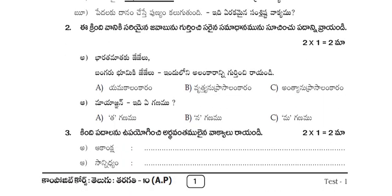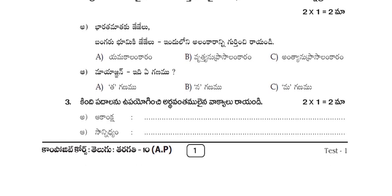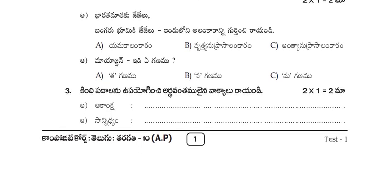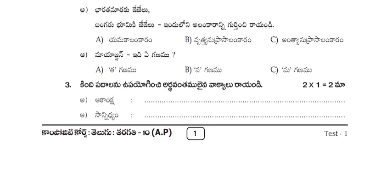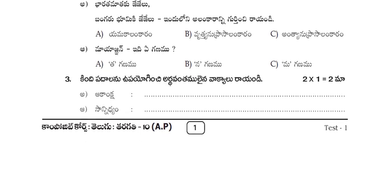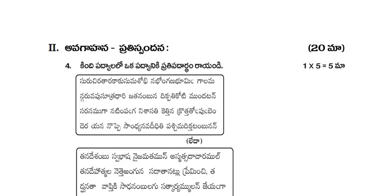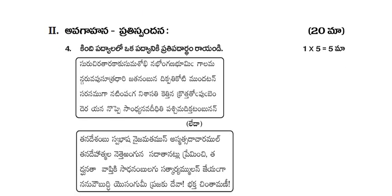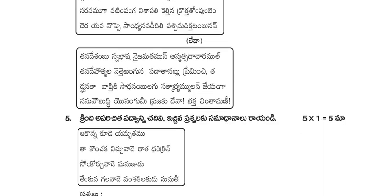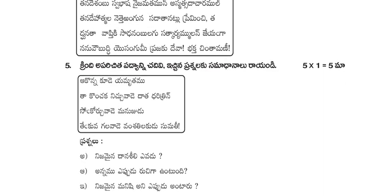Two into one is equal two marks new PC questions. In the next, main thing two into one two marks in your PC. Then one to five is equal five marks in your, for each one or two. Next five into one is equal five marks new PC.